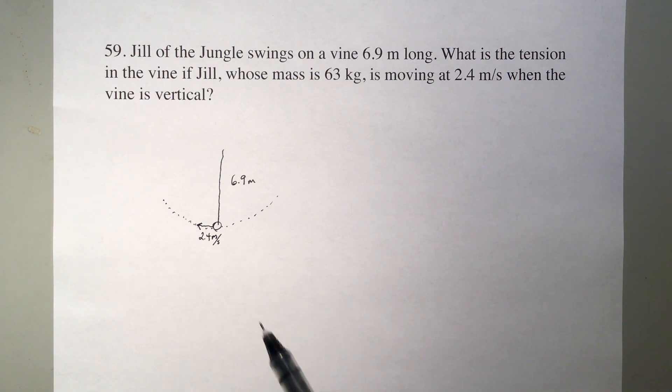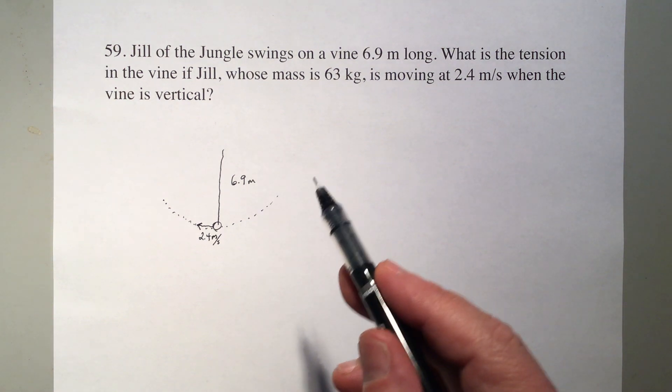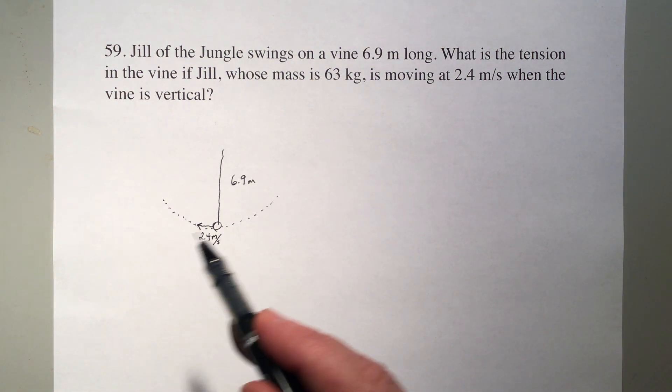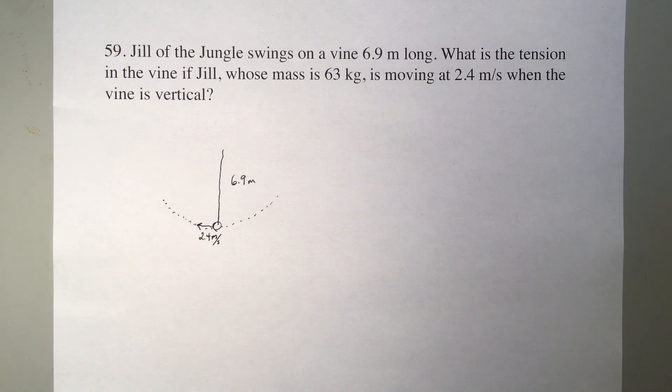So here's Jill. Here's her vine. She's moving in a circle, and at the moment she's going 2.4 meters per second forward speed.